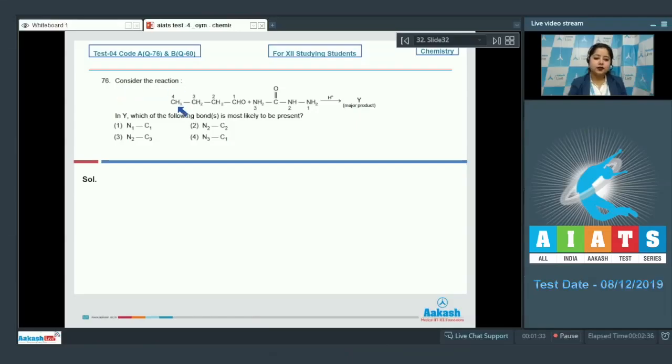Consider the reaction. In this case, butanol reacts with semi-carbazine in acetic medium and the compound formed is Y. In Y, which of the following bonds is most likely to be present? The options are N1C1, N2C2, N2C3, N3C1.